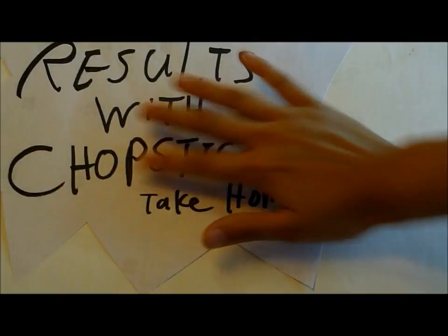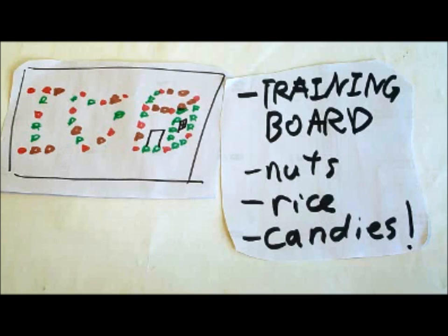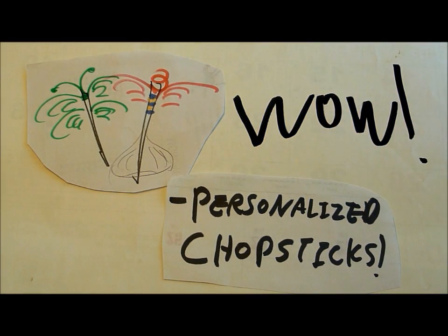So what do you take home from the 4C chopstick program? You take home the training board, which you can continue to train your child with using nuts, rice, and candies. The photo of your wonderful child's cake castle. Personalized chopsticks. Wow!